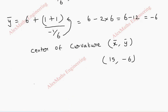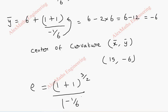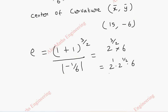The radius of curvature ρ = (1 + (dy/dx)²)^(3/2) / |d²y/dx²| = (1 + 1)^(3/2) / (1/6). Since the denominator is negative we take the modulus. This gives 2^(3/2) × 6 = 2¹ × 2^(1/2) × 6 = 12√2.